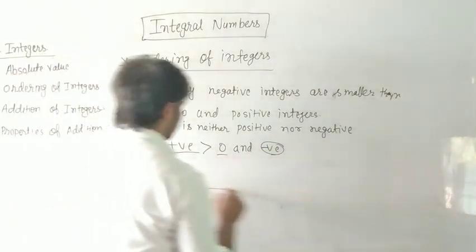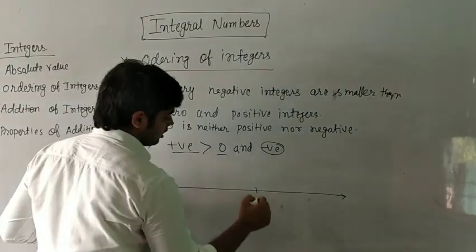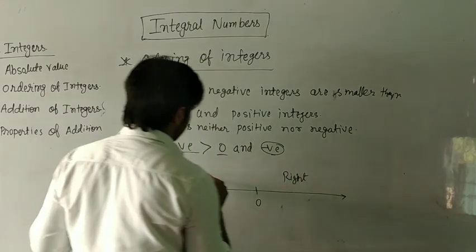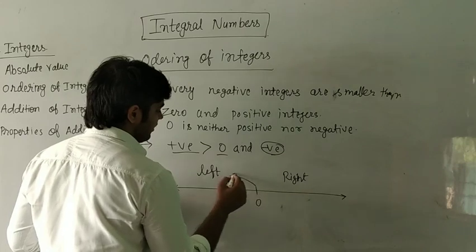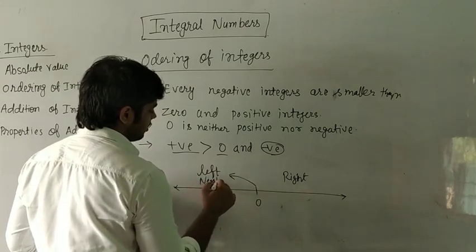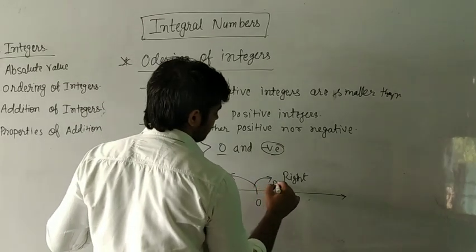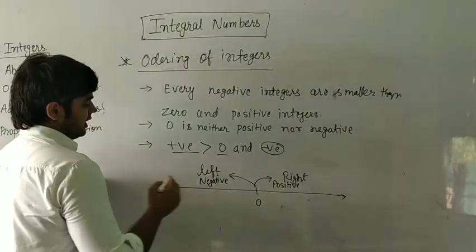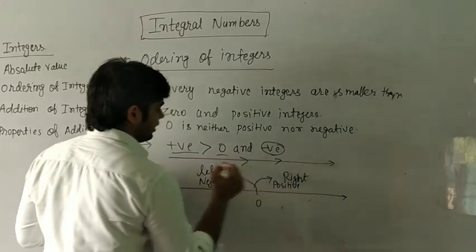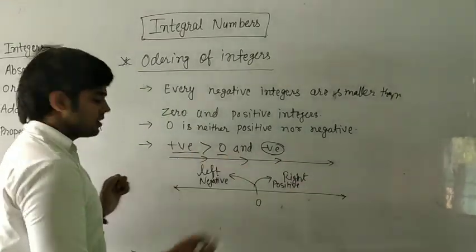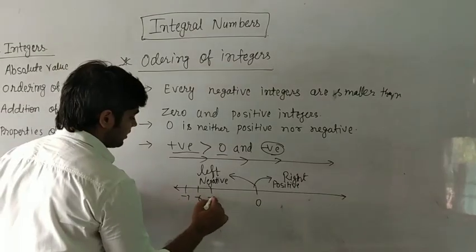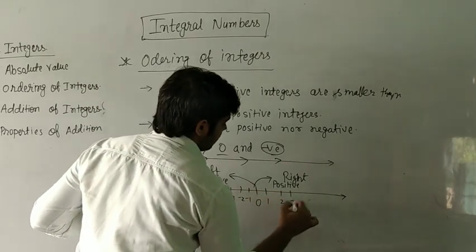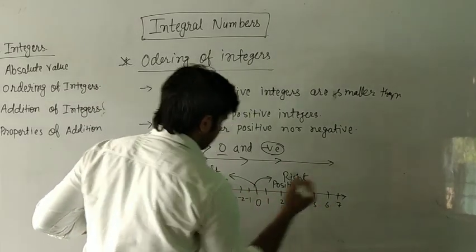On the number line, to the right of zero are positive integers, and to the left of zero are negative integers. If you move from left to right, the value increases.